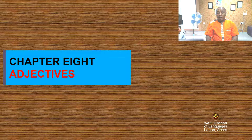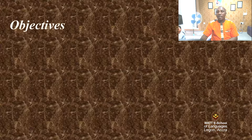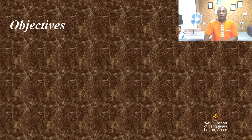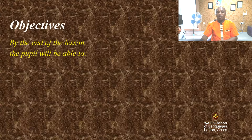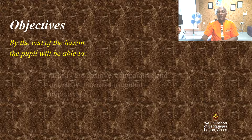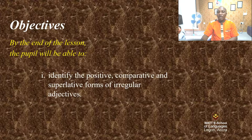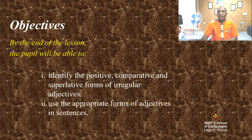Today's lesson is about adjectives. Let's quickly have a look at the objectives of this lesson. By the end of the lesson, the students will be able to: one, identify the positive, comparative, and superlative form of irregular adjectives. Two, use the appropriate forms of adjectives in sentences.